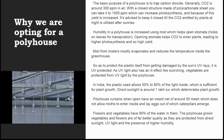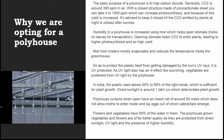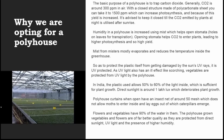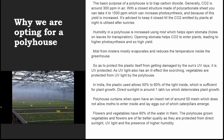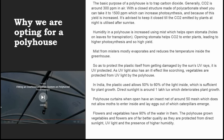The basic purpose of a poly house is to trap carbon dioxide. Generally CO2 is around 300 ppm in air, but with a closed structure made of polycarbonate sheet you can take it up to 1500 ppm, which increases photosynthesis and therefore yield. It is advised to keep it closed until CO2 emitted by plants at night is utilized after sunrise. Humidity in a poly house is increased using mist, which helps open the stomata — the tiny holes on the leaves for transpiration — allowing CO2 to enter the plant, leading to higher photosynthesis and higher yield.